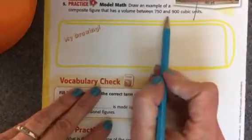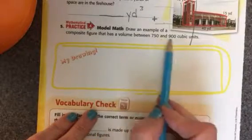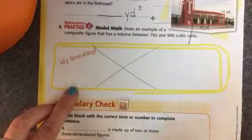Okay, number five says draw an example of a composite figure that has a volume between 750 and 900 cubic units. You actually don't need to do that piece.